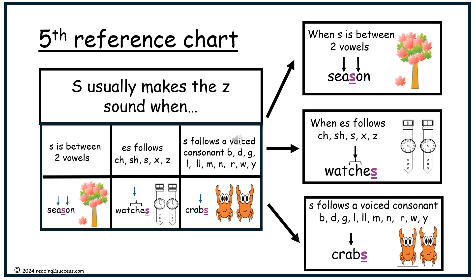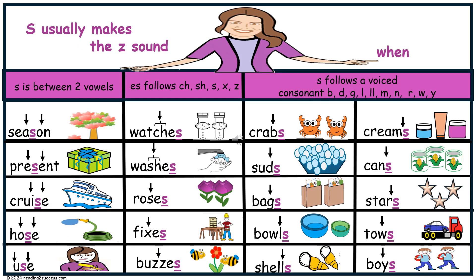Fifth reference chart. S usually makes the Z sound when S is between two vowels, as in season; when -ES follows CH, SH, X, or Z, as in watches; and when S follows a voiced consonant — B, D, G, L, M, N, R, W, Y — as in crabs. This reference chart provides a list of words for each category.